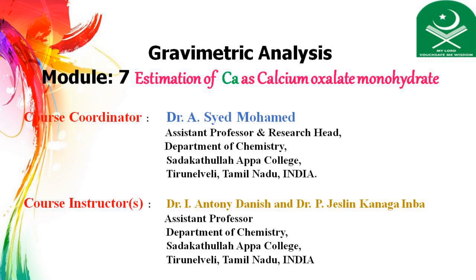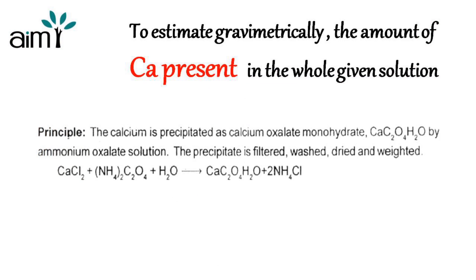In this module, we are going to discuss estimation of calcium as calcium oxalate monohydrate. To estimate gravimetrically the amount of calcium present in the whole of the given solution, the calcium is precipitated as calcium oxalate monohydrate by ammonium oxalate solution. The precipitate is filtered, washed, dried and weighed. From the precipitate weight, we can easily determine the amount of calcium present in the whole of the given solution.